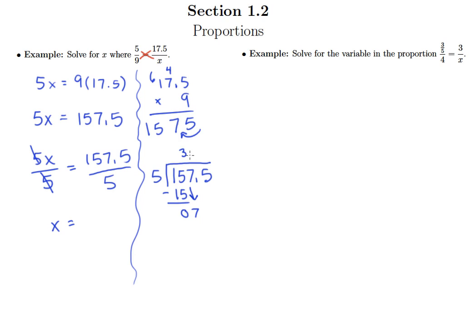5 goes into 7 once. We have a remainder of 2, drop down that 5, and I better put this decimal point directly above in the quotient. And then 5 goes into 25, 5 times. So x is equal to 31.5.